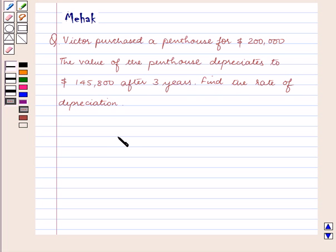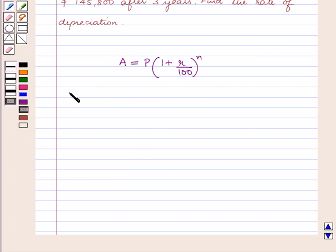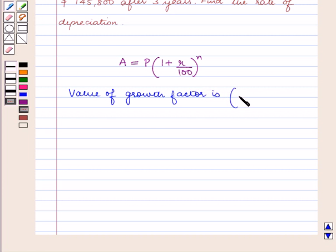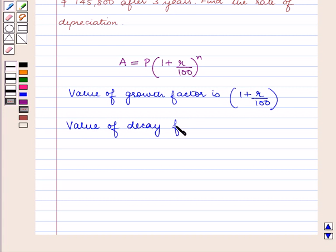The compound interest formula is A is equal to P into 1 plus R upon 100 raised to power n. The value of the growth factor is 1 plus R upon 100, and the value of the decay factor is 1 minus R upon 100.